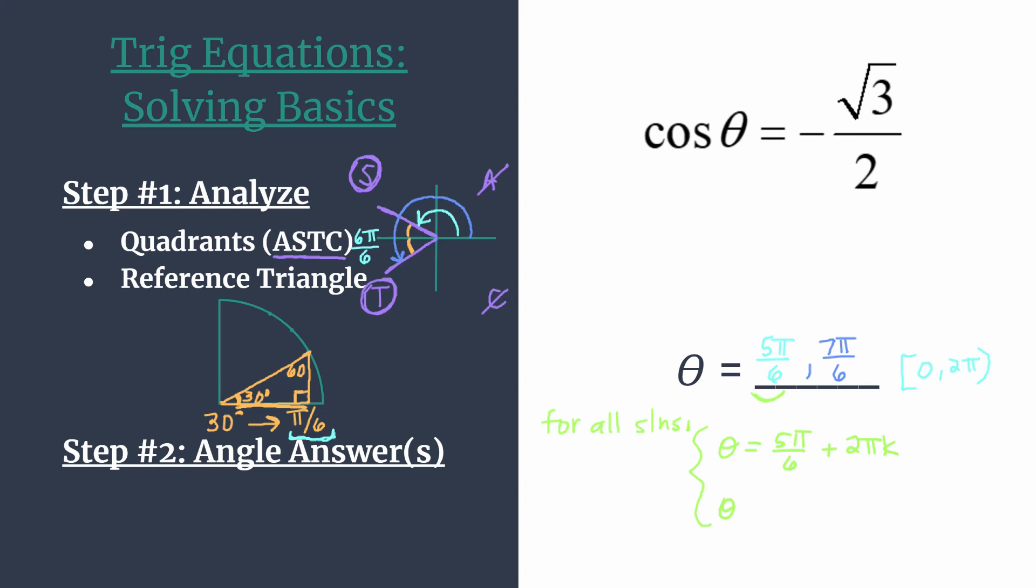So let's write the second solutions equation. This time it'll be 7 pi over 6 and all its coterminal angles, so just plus 2 pi k. And you may see this, sometimes people like to use n or another variable to represent all the integers. Whatever you like to use is completely fine. But these two equations represent the solution for all solutions to that equation.